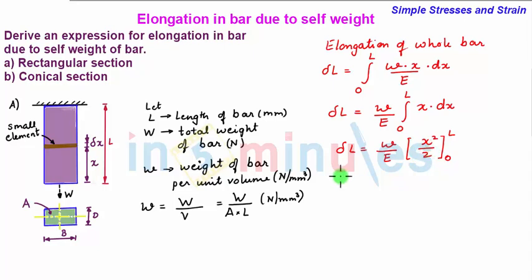So now upon applying the limits we have delta L is equal to w by E into L square minus 0 by 2. So the expression for delta L in rectangular section bar due to itself weight is given as WL square upon 2E. So this is the required expression.